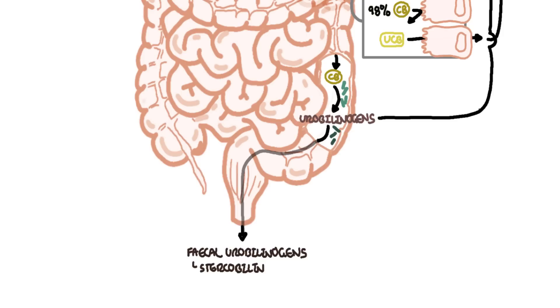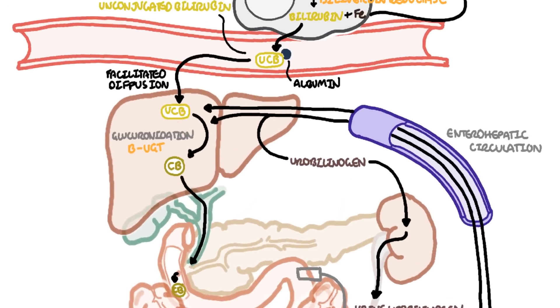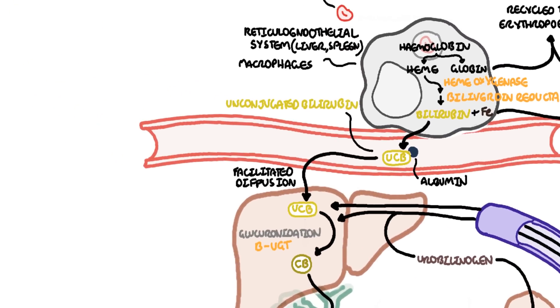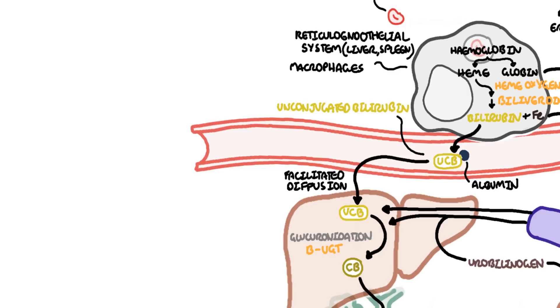That concludes the basic metabolism of bilirubin. Now jaundice is where you have high amounts of bilirubin in the blood, hyperbilirubinemia, and it can be either conjugated or unconjugated bilirubin. Clinically, hyperbilirubinemia can be divided into two major categories: unconjugated bilirubin mainly or conjugated bilirubin.